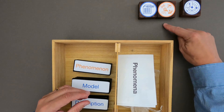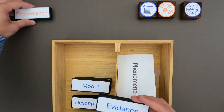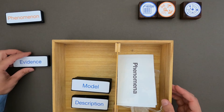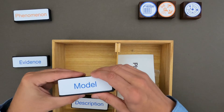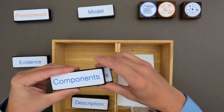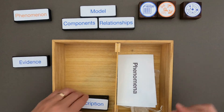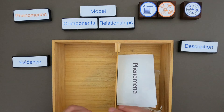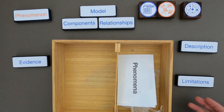We're using the phenomena and the evidence to develop a model, so we want to make sure we define the phenomena but we also want to make sure that we thoroughly look through the evidence before we start to make our model. As always, a model is going to have two parts: the important components and then how those components are related together. It'll also have a description, and one thing we're going to add is the limitations. Models are super powerful but they all have fundamental differences between the phenomena.